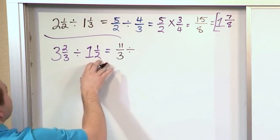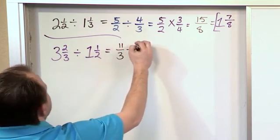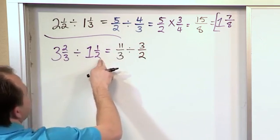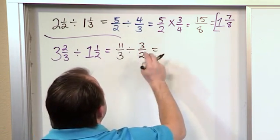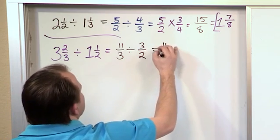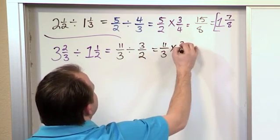And then we divide by this one. 1 times 2 is 2, plus 1 is 3, and we write it over the 2. Now, we change this to multiplication. So we'll have 11 thirds times, and we flip this one to 2 thirds.